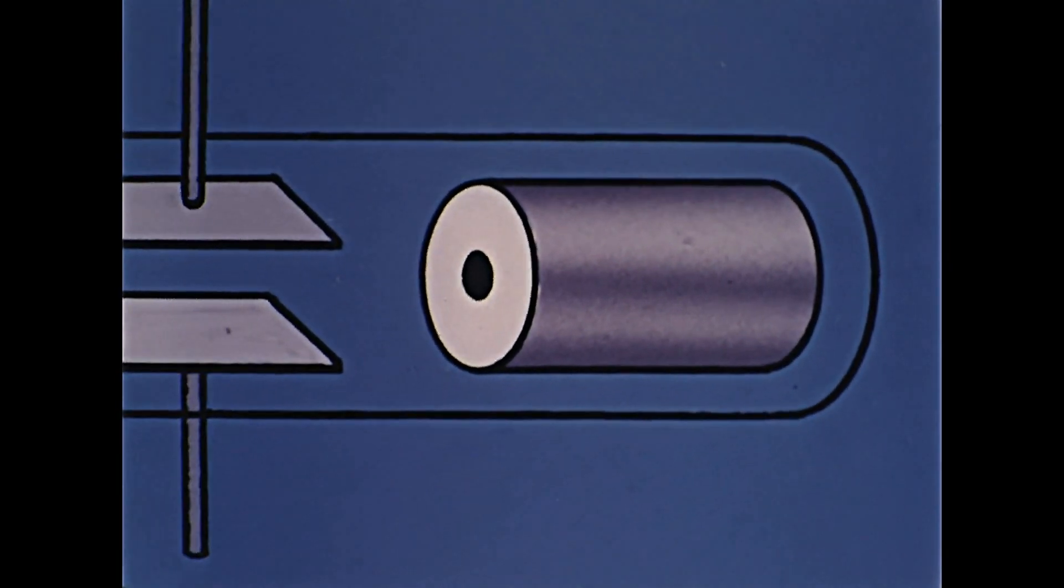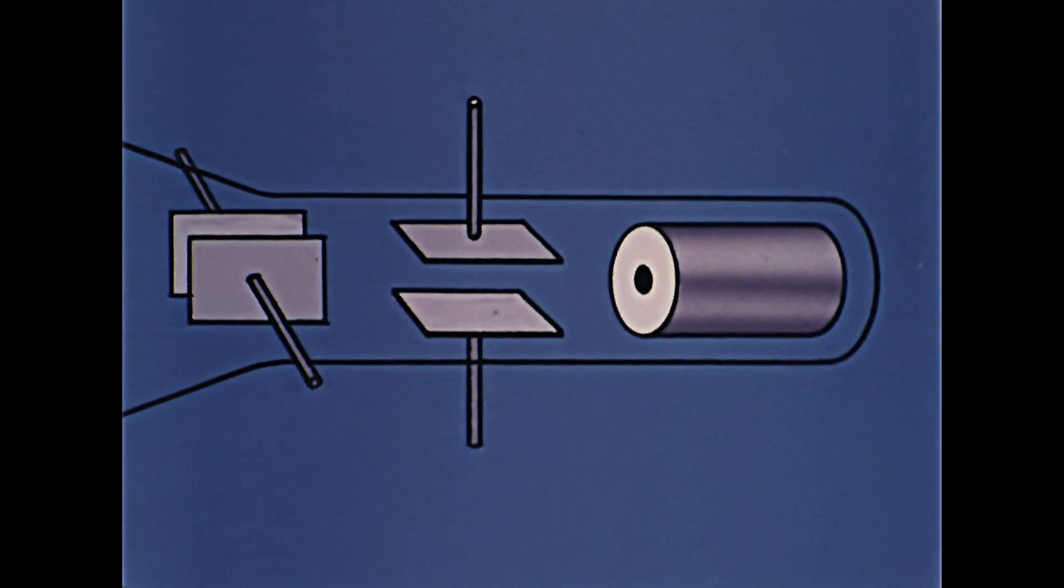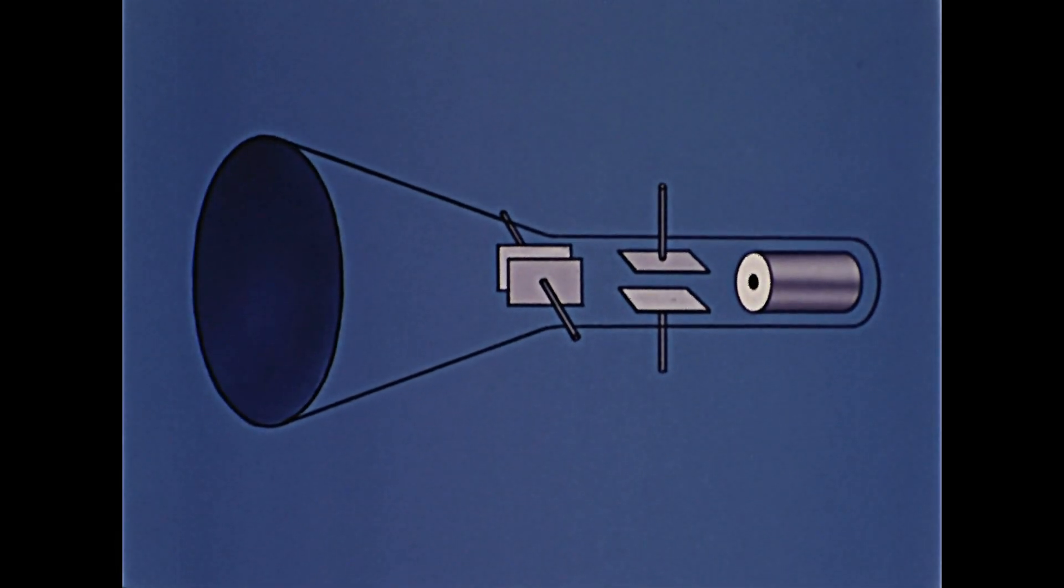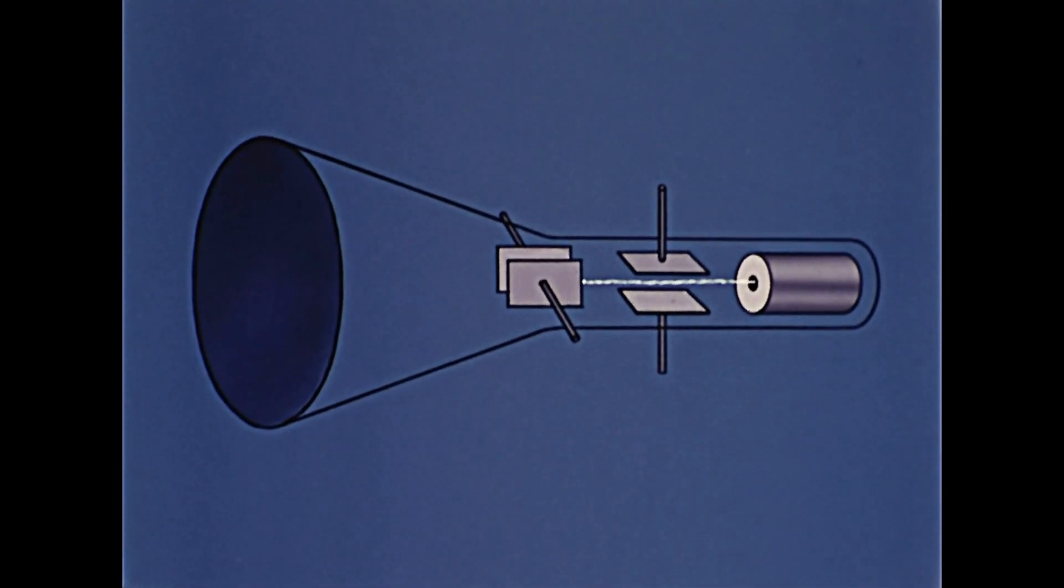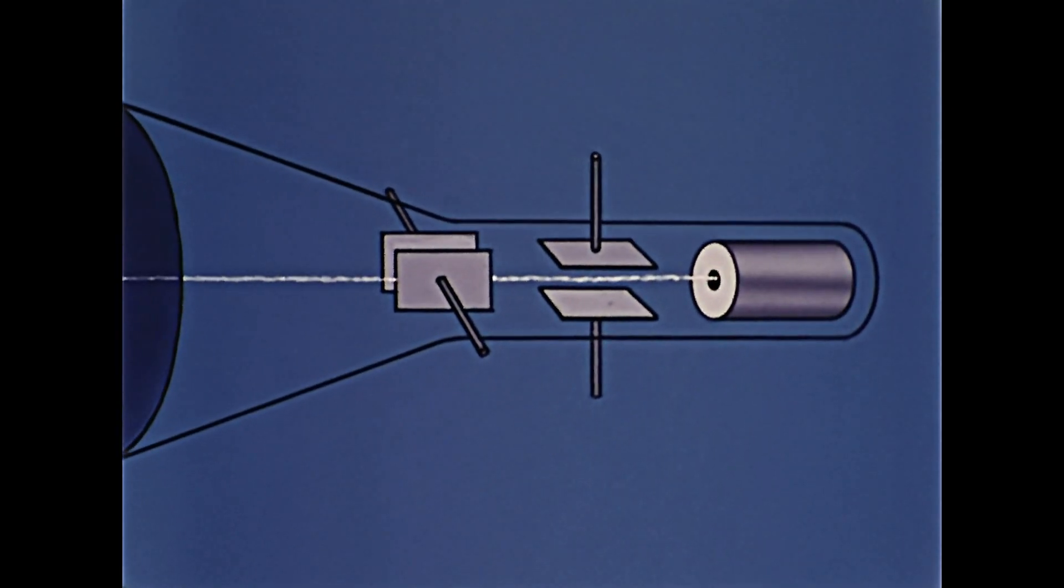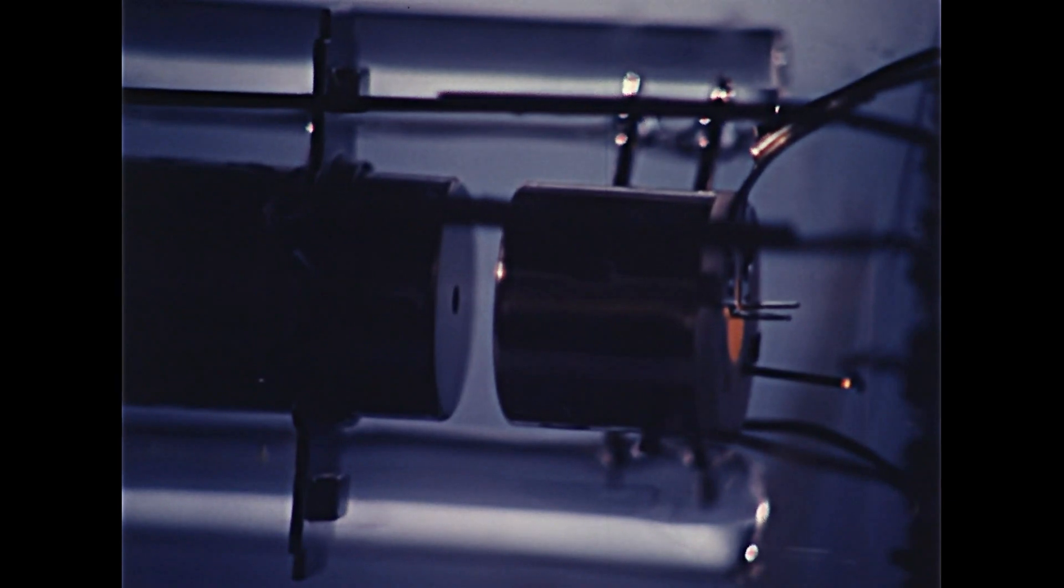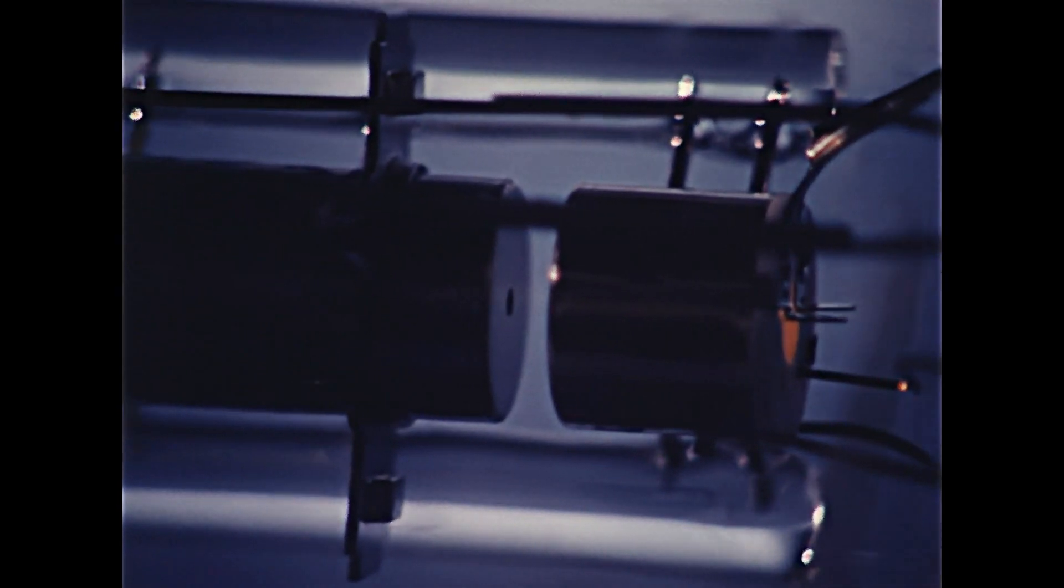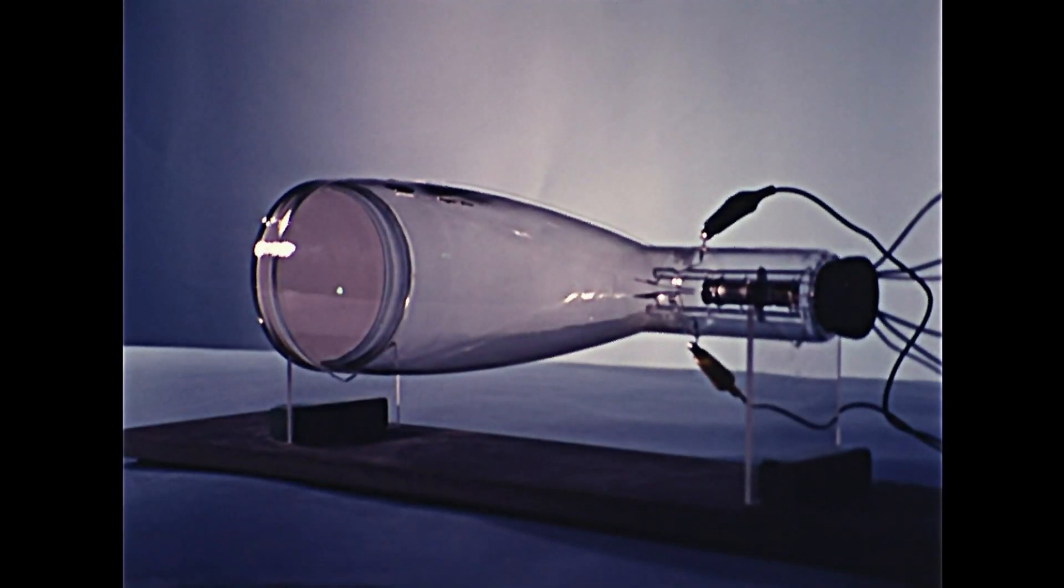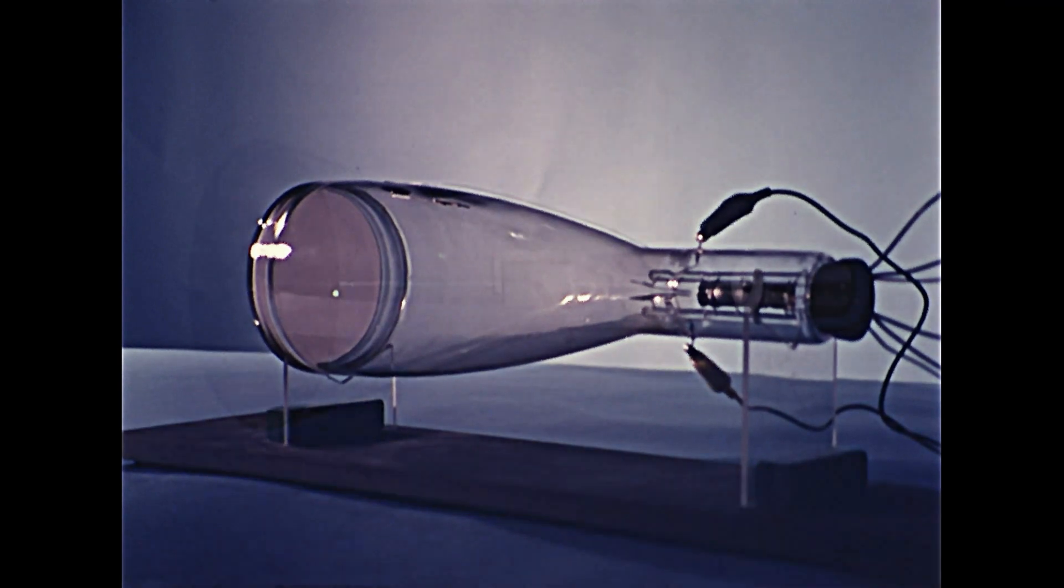This simplified animation demonstrates how the cathode ray tube works in an oscilloscope. When electrons leave the hot cathode in the electron gun, they travel in a straight line toward the fluorescent screen. As electrons move down the tube, they pass two metal plates. Undeflected, the beam produces a spot. But it is only by moving the spot that it becomes useful to us.